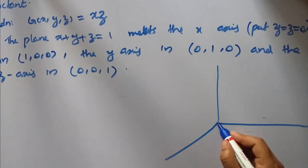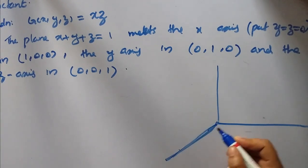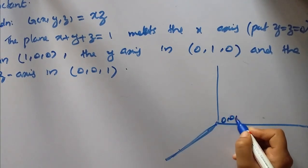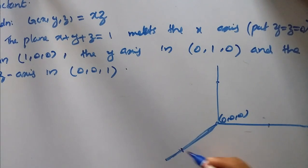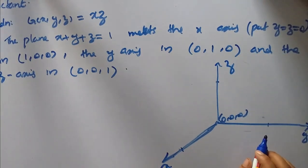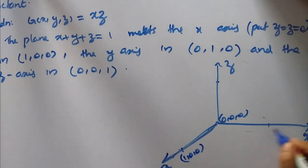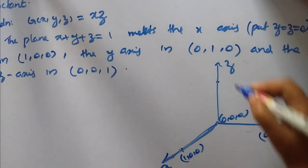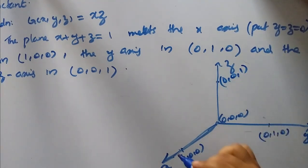The origin is at (0, 0, 0). The plane intersects the x-axis at (1, 0, 0), the y-axis at (0, 1, 0), and the z-axis at (0, 0, 1). So we draw these three points and join them.